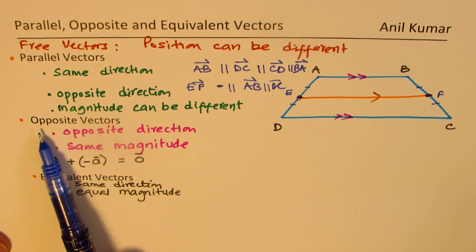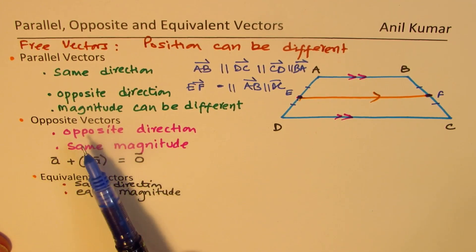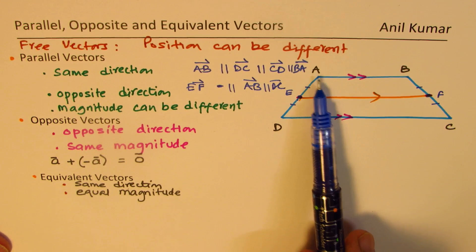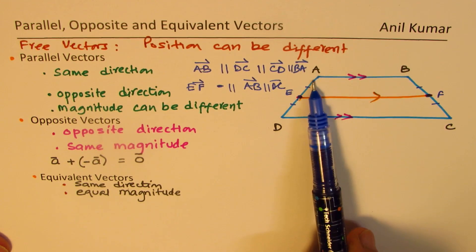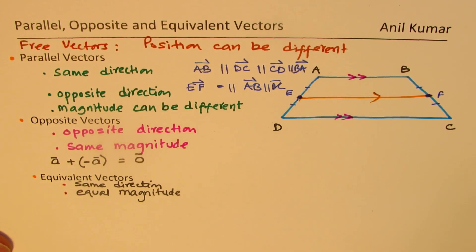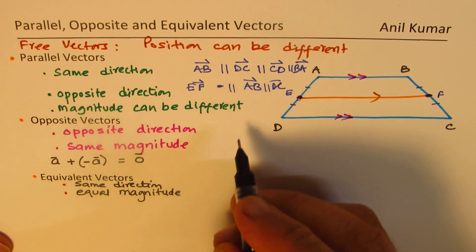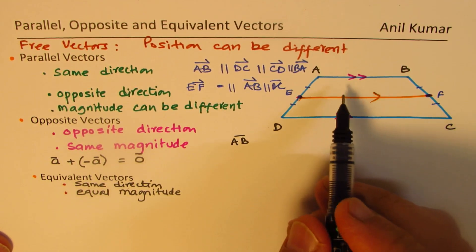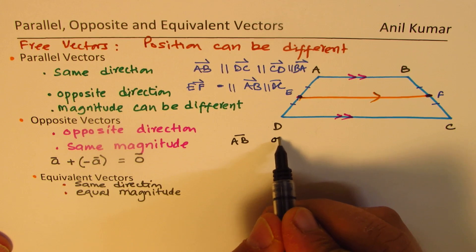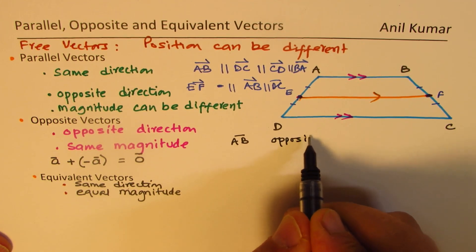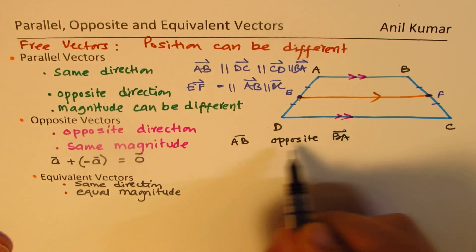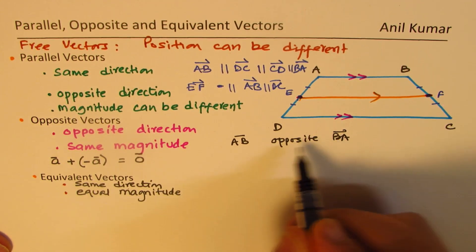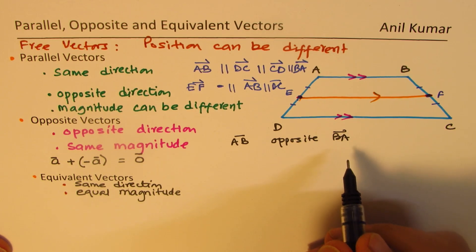Now let's talk about opposite vectors. Vector opposite to AB will be BA. We can say that AB is opposite to BA — these two are opposite vectors since they have same magnitude but opposite direction.